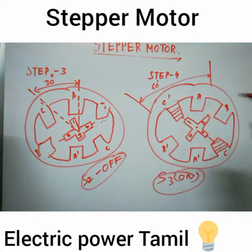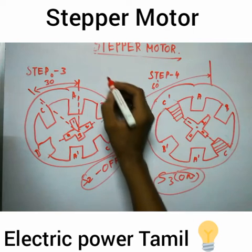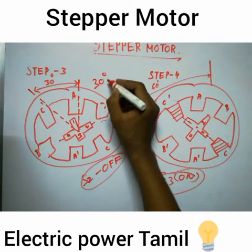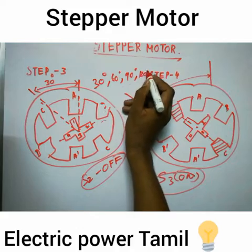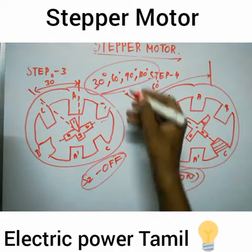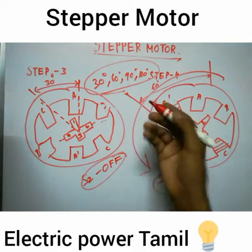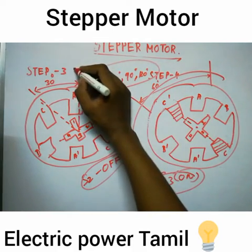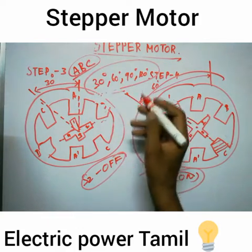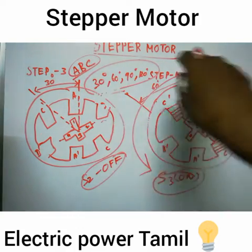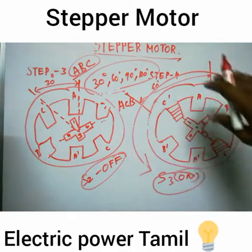This is the step angle control — we control 30, 60, 90, 120 degrees of rotation. For anticlockwise direction, the phase sequence is A, B, C. For clockwise direction, the phase sequence is A, C, B.